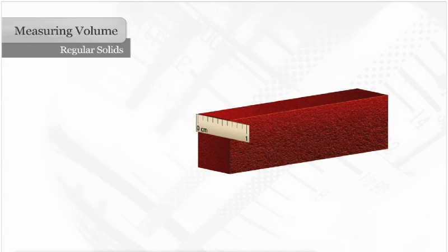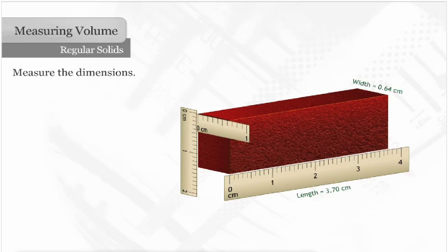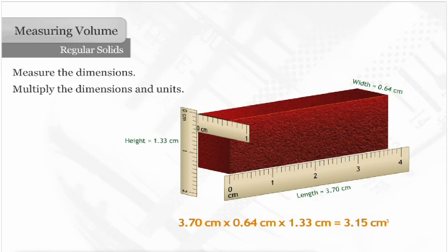To determine the volume of a regular solid, such as a brick, first measure the dimensions of the object. Then multiply the three dimensions and their units. In this example, we measured in centimeters. Therefore, the units for volume are recorded as cubic centimeters.